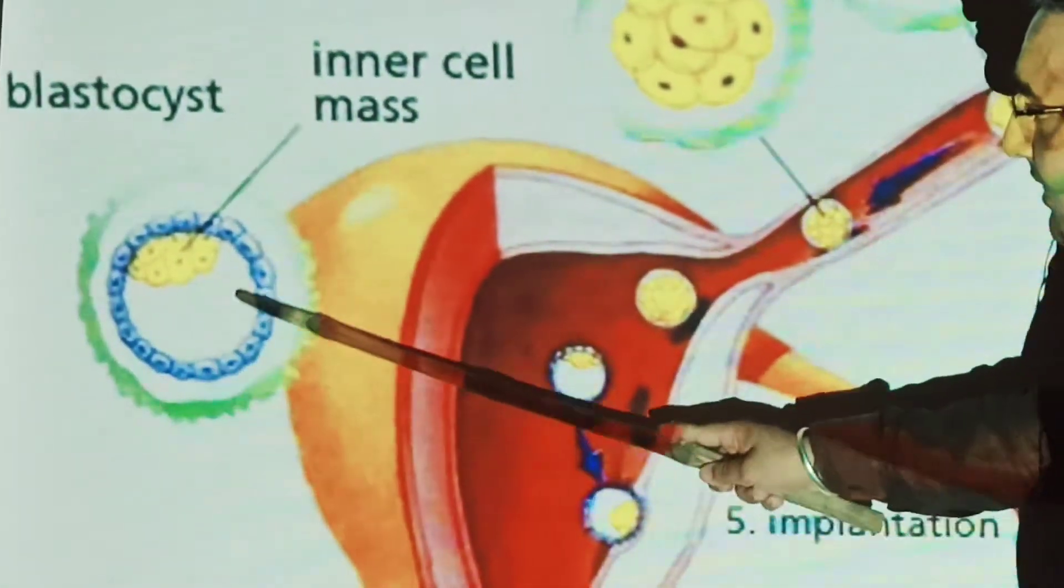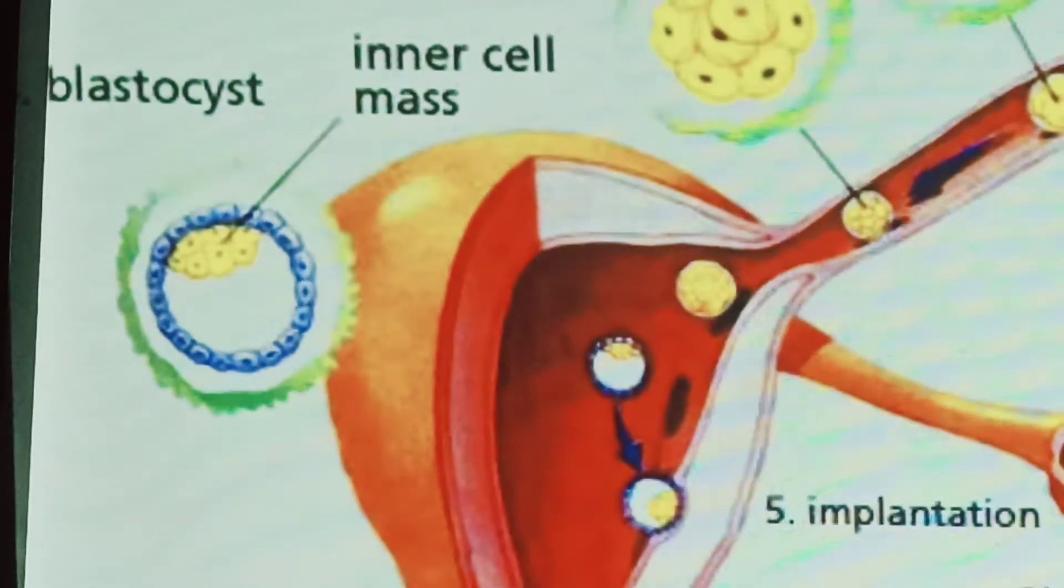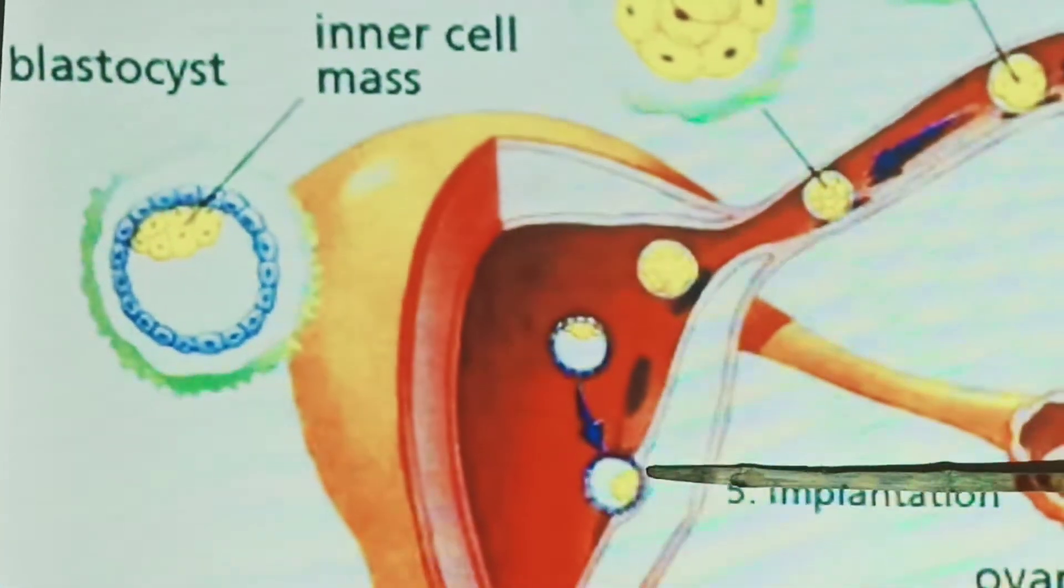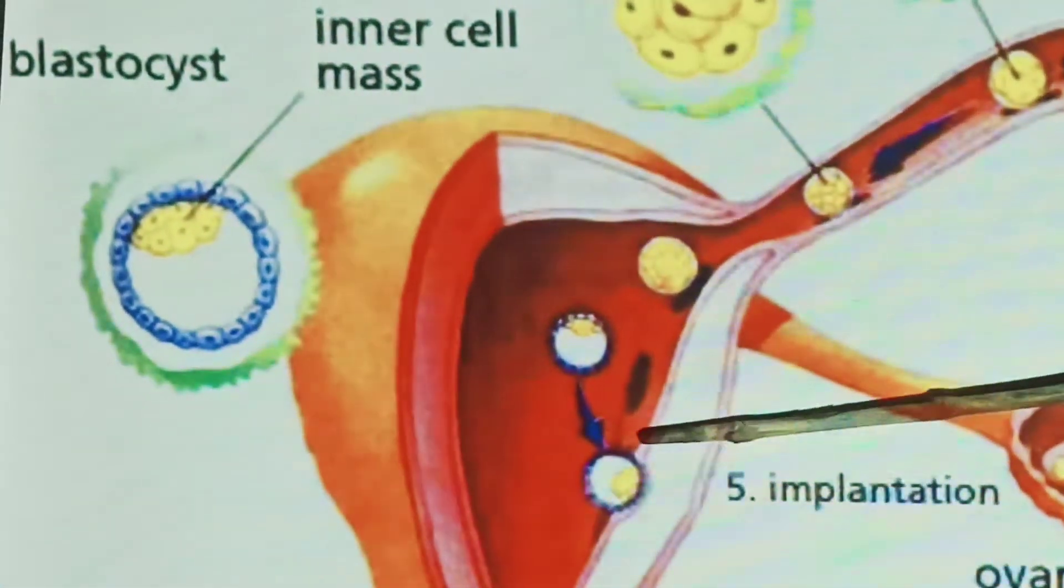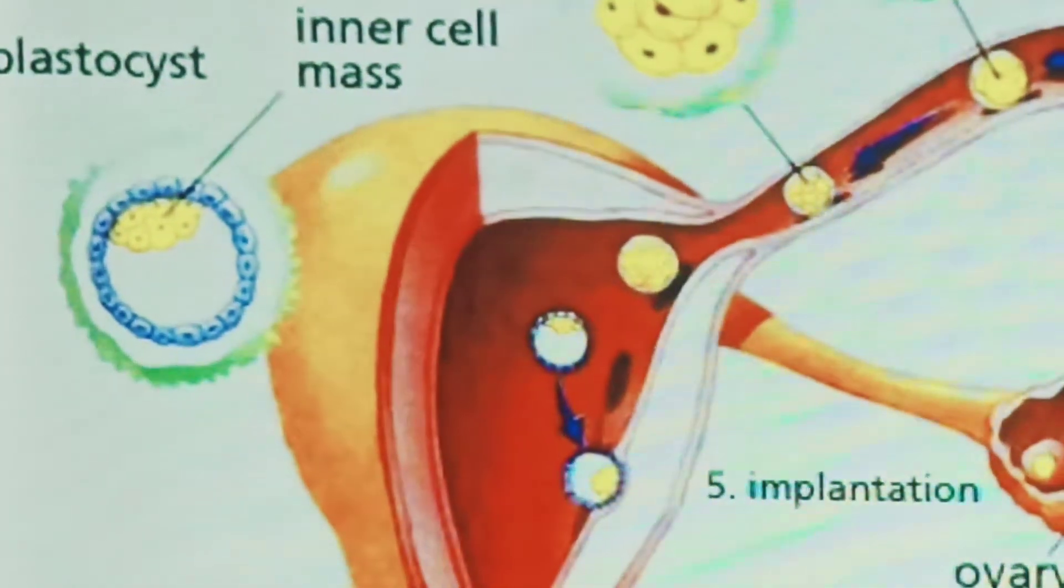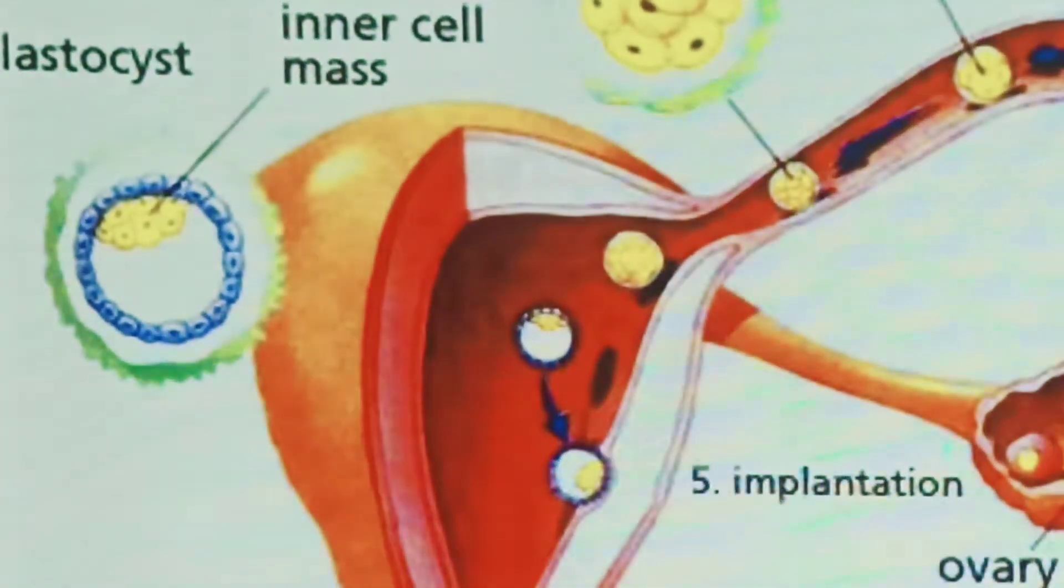Becomes blastocyst with outermost layer of cells and the inner mass cells. So outer layer of that blastocyst attaches to the uterus wall. And this process is called implantation.